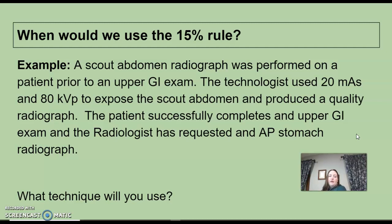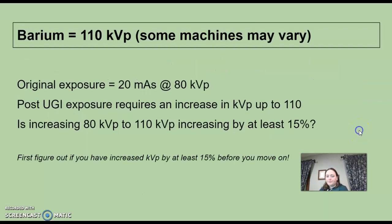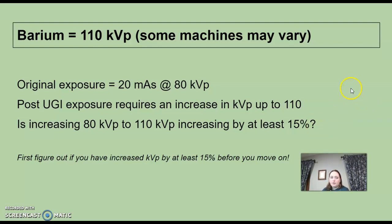The patient successfully completes the upper GI, and the radiologist says they want a post-procedure AP stomach. What technique will you use? For us, any barium work is done at 110 KVP — some machines might vary, some say 109, some go up to 120.